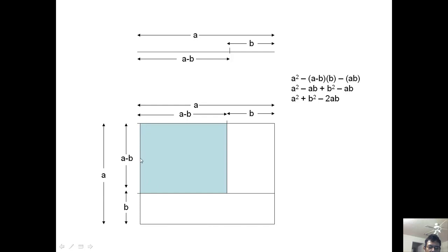And this is my a minus b whole square. Each side is of length a minus b. So this is my b still and this is my b. And this is of length a.